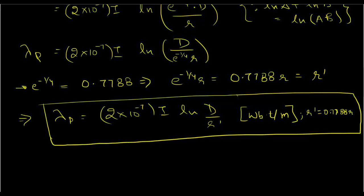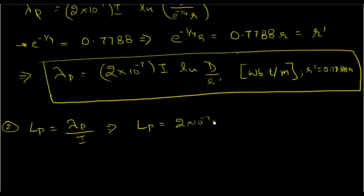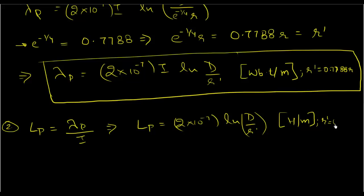From this it's very easy to get the inductance at that point: that's lambda P over i, which gives inductance equals 2 times 10 to the power minus 7 times ln of d over r prime, in henries per meter, where r prime equals 0.7788 r.